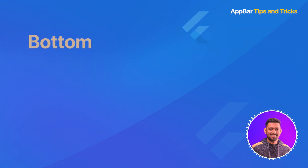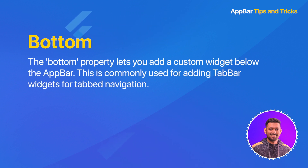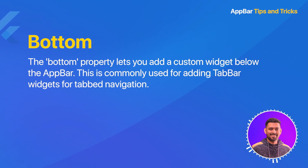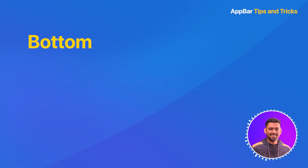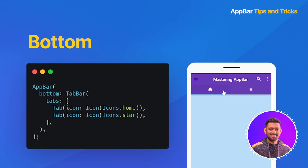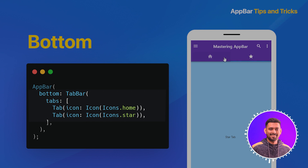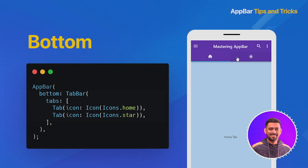The Bottom property lets you add a custom widget below the AppBar. This is commonly used for TabBar widgets for tab navigation. In this example, we have added a TabBar with two tabs below the AppBar.